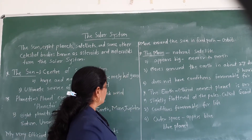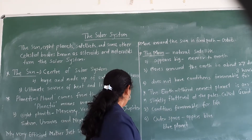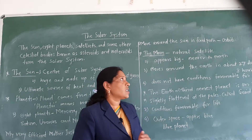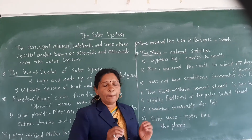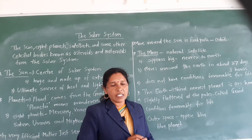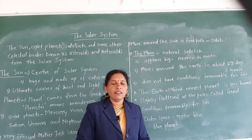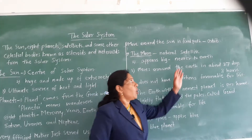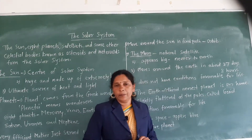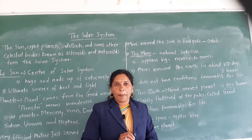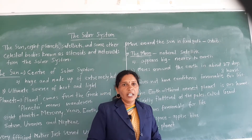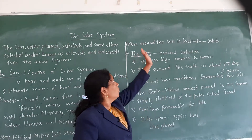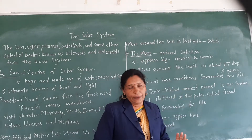These planets are moving around the sun in a fixed path. That fixed path is called an orbit. An orbit is the fixed path on which the planets move around the sun.